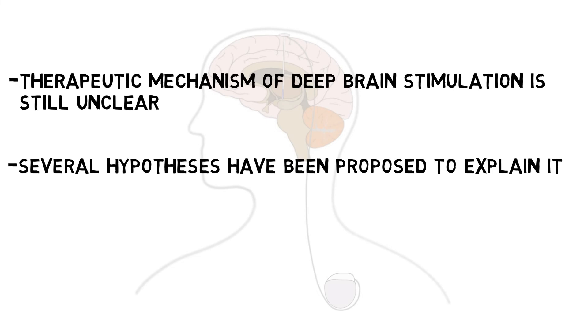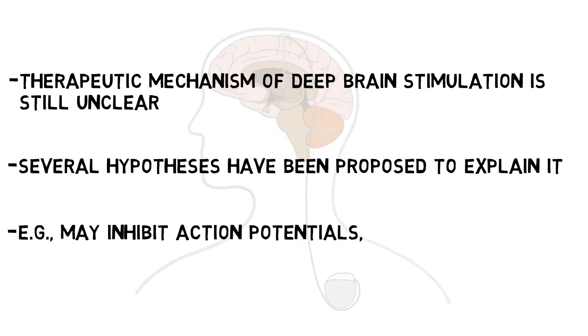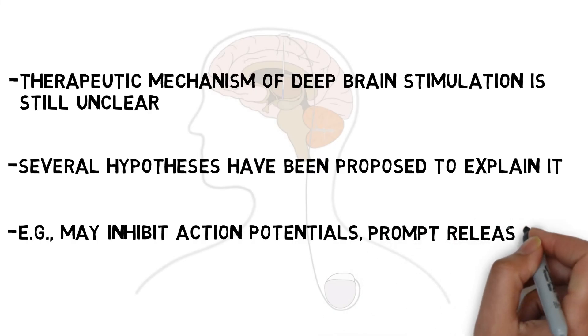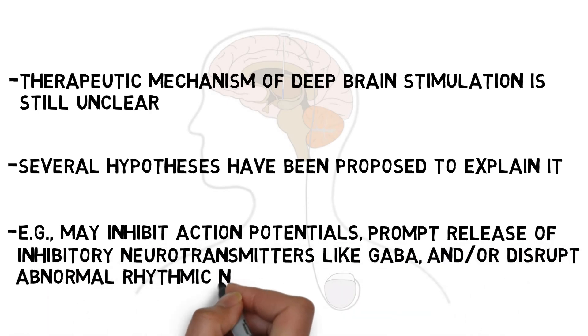For example, deep brain stimulation may inhibit action potentials by causing prolonged depolarization of neuronal membranes, reduce neuronal activity by prompting the release of inhibitory neurotransmitters like GABA, and disrupt abnormal rhythmic neuronal firing that might interfere with healthy brain function.